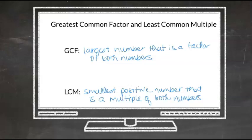Whether you're going to do the Greatest Common Factor or the Least Common Multiple, your first step is to do a factor tree of the numbers. And then from there you can find both the Greatest Common Factor and the Least Common Multiple.